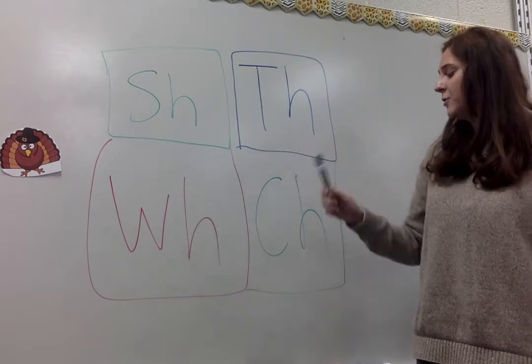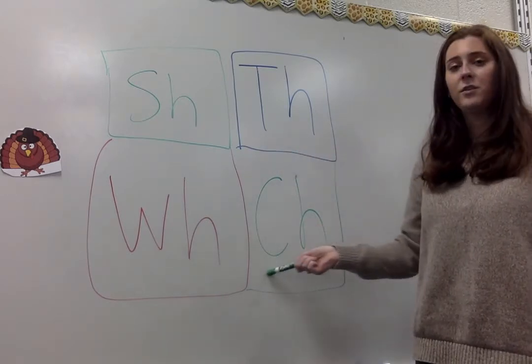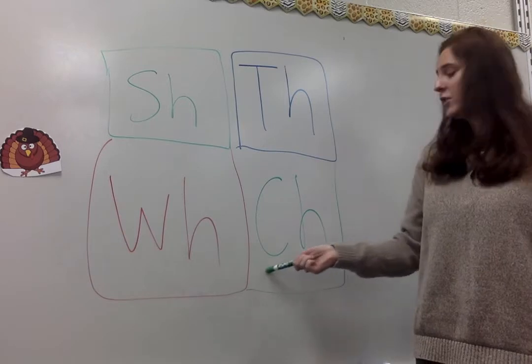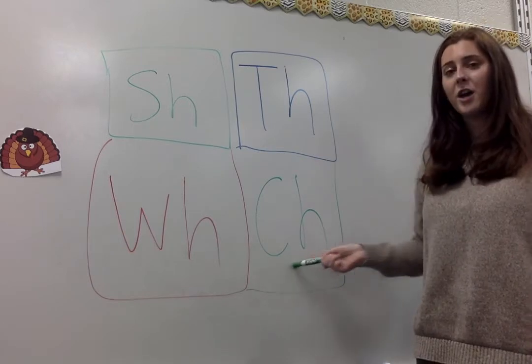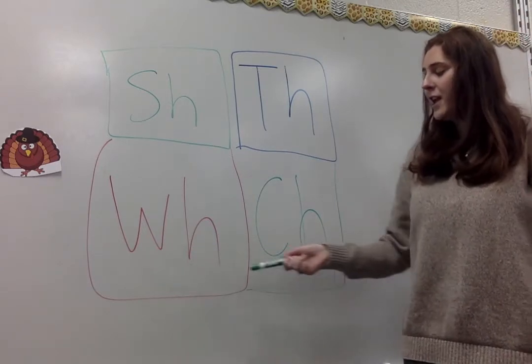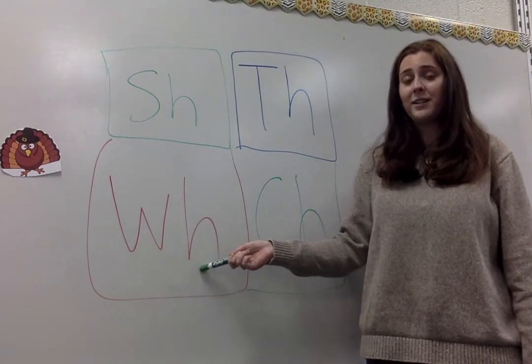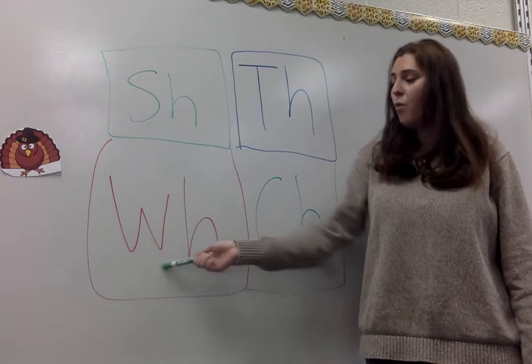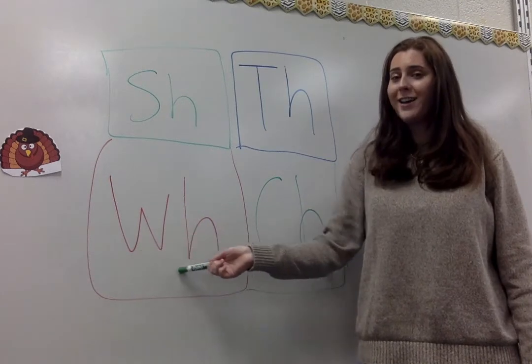Below the TH we have CH which makes what? Ch-sh-sh. Choo-choo. Choo-choo. And then we have WH which makes the what? Wuh. Wuh. Wuh.